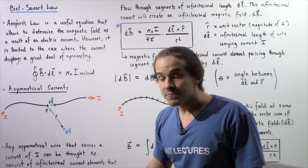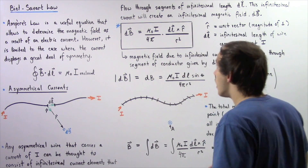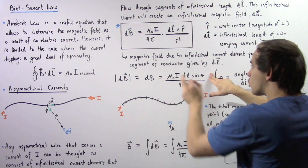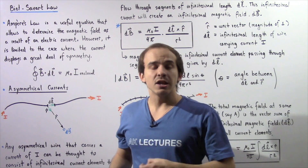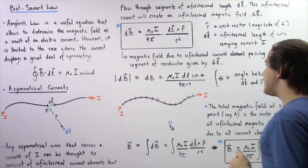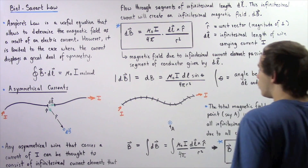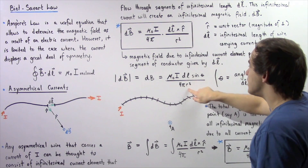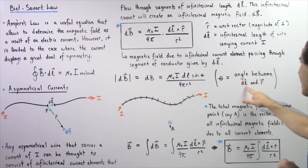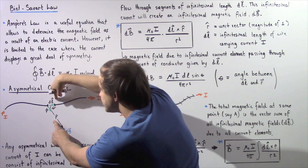The Biot-Savart Law tells us the magnetic field due to a very small current element passing through a small segment of conducting wire DL. The magnitude of vector dB is given by: dB = (mu naught × I × DL × sin θ) / (4π R²), where θ is the angle between vector DL and vector R, as shown in the diagram.